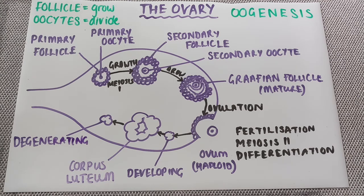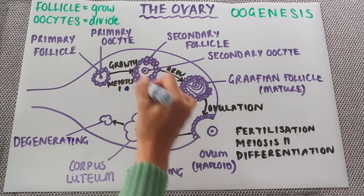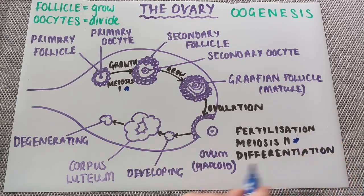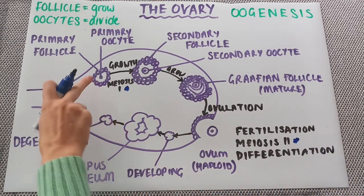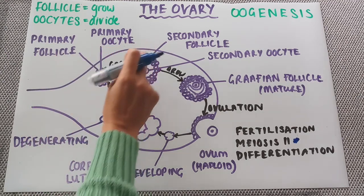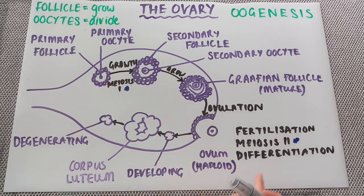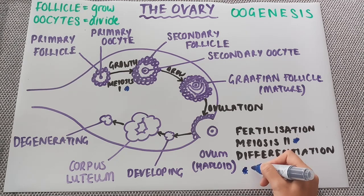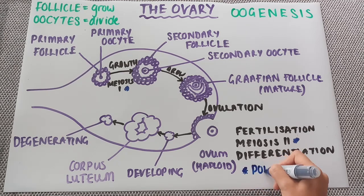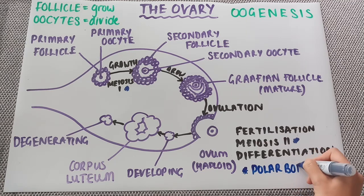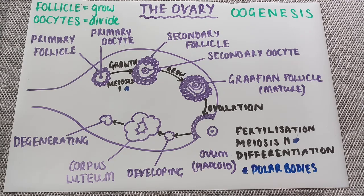The final thing to talk about is what else is produced during meiosis 1 and meiosis 2. This primary oocyte doesn't just form a secondary oocyte — there is another product from meiosis 1. And with meiosis 2, it doesn't go from a secondary oocyte just to one ovum. In these processes, polar bodies are formed. These are basically just very small cells which have no further development — they degenerate.